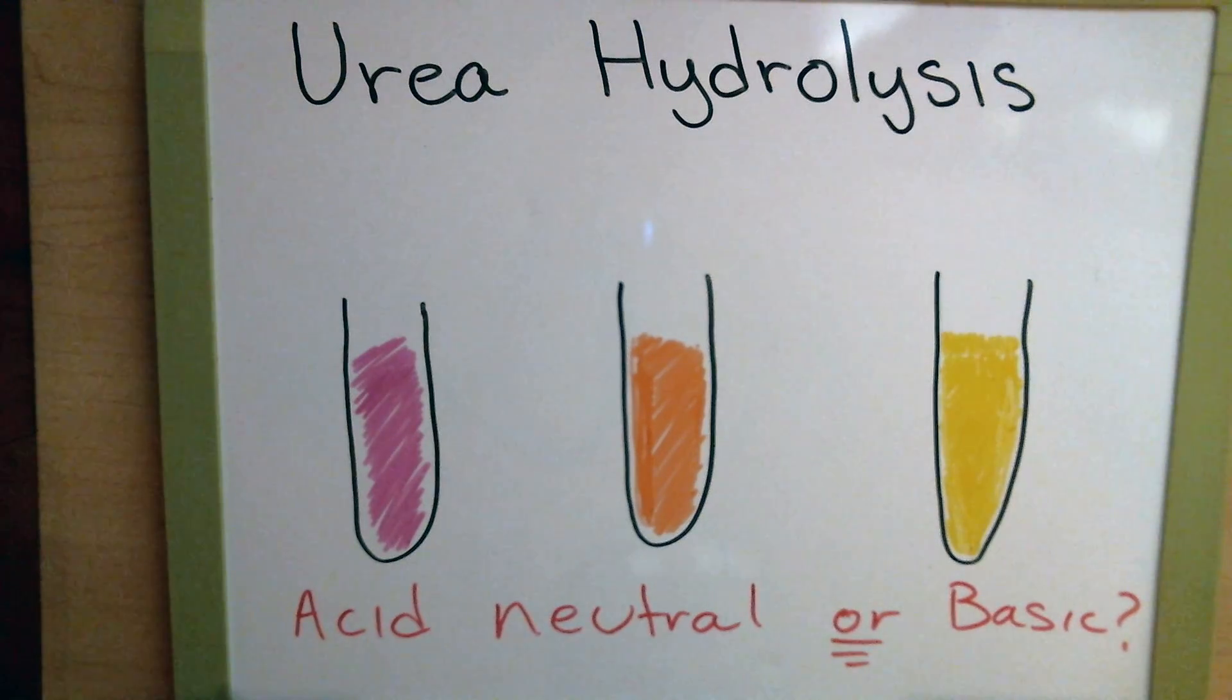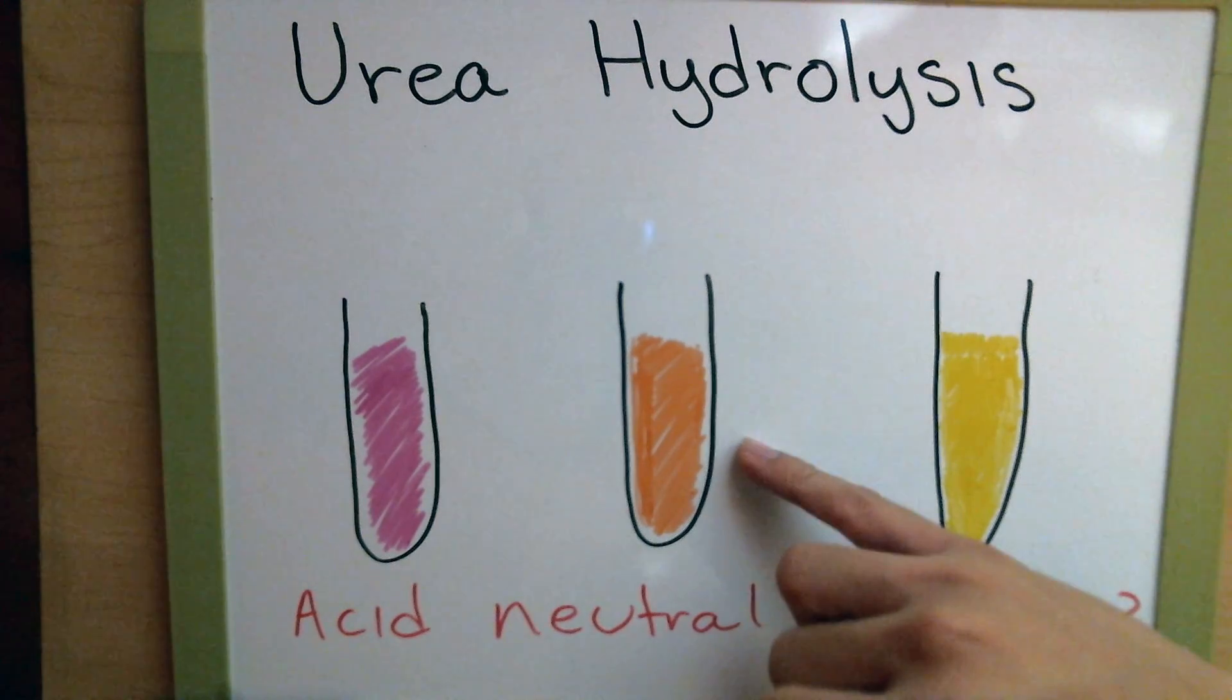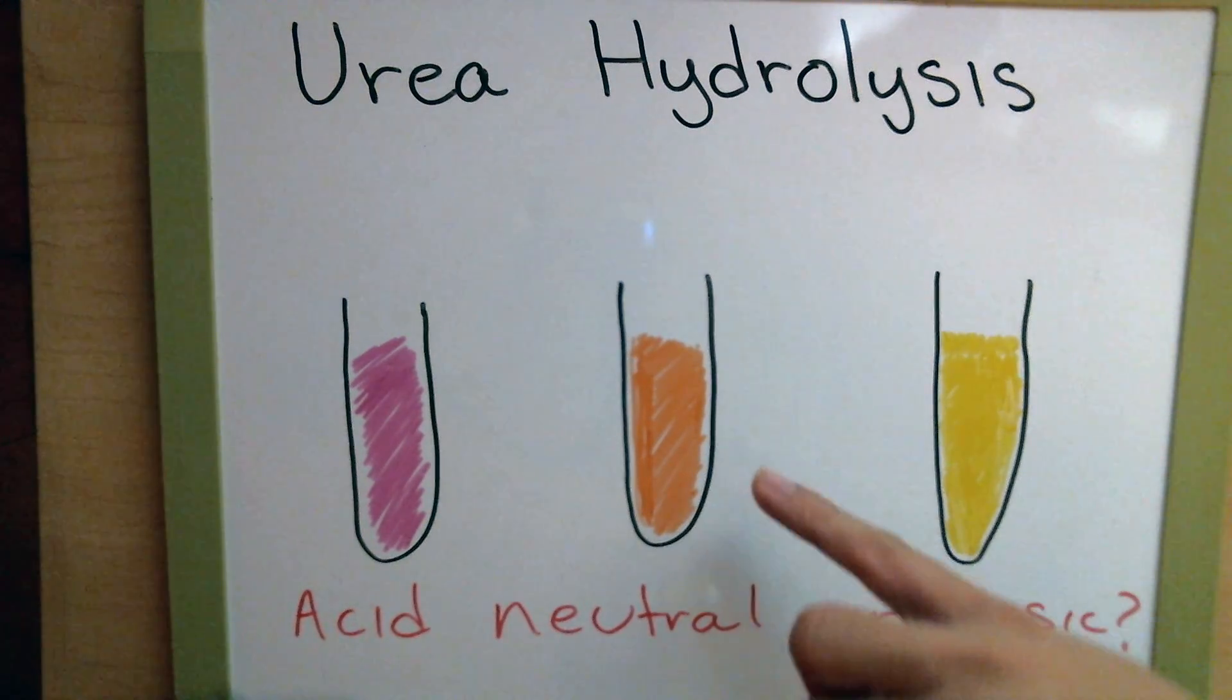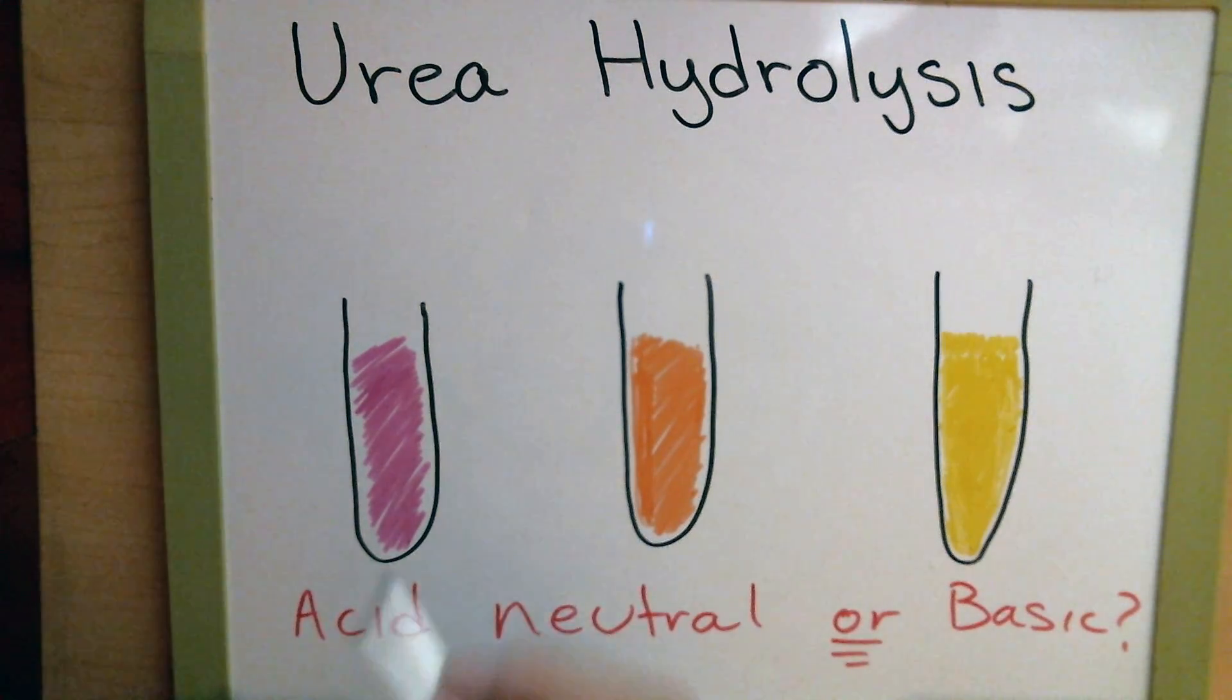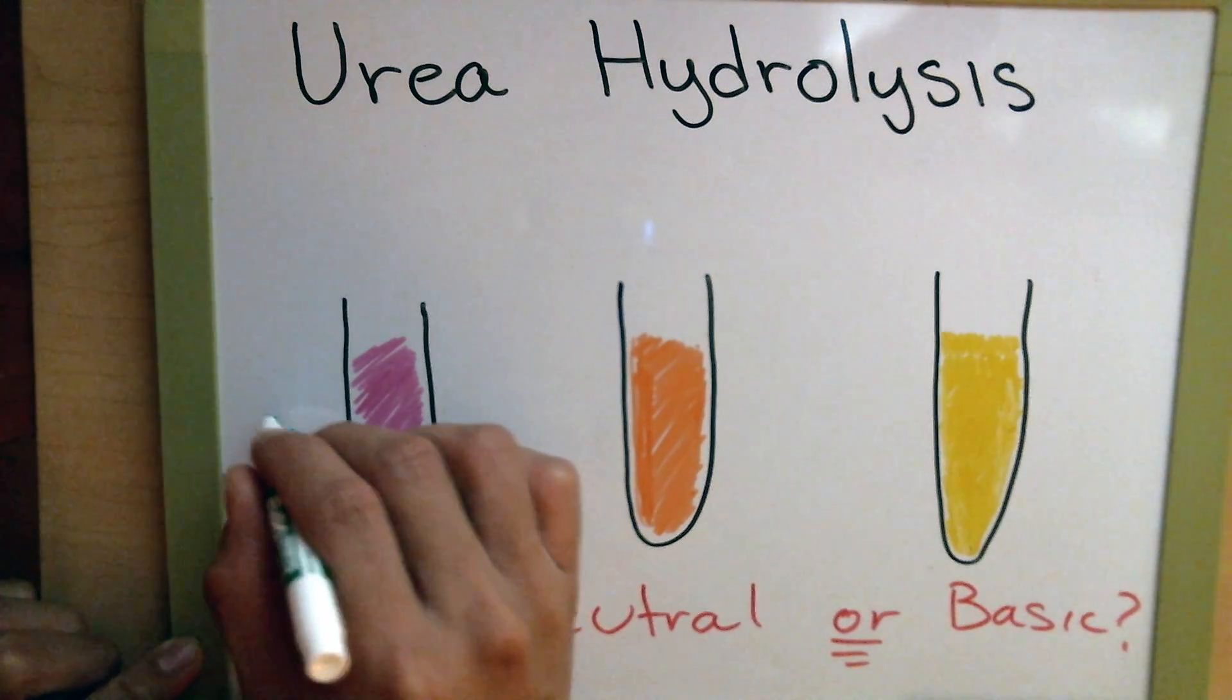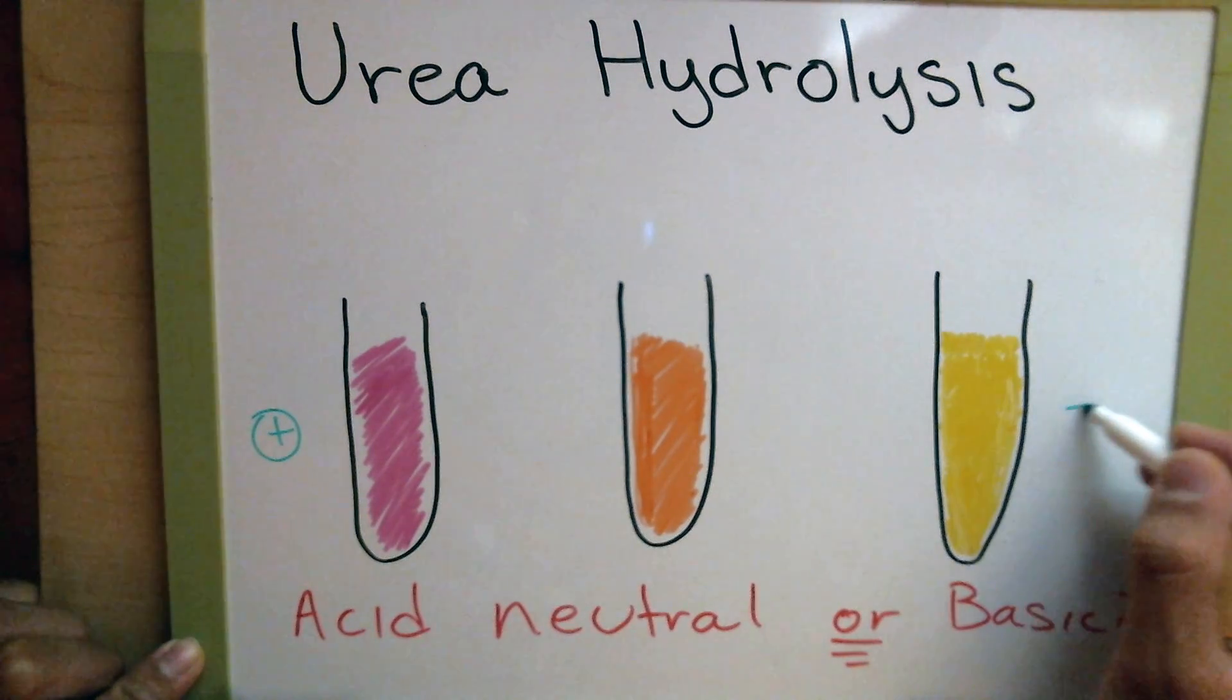Moving on, all we do here is a simple inoculation of the bacteria into the broth. And here in the middle, we just have the broth, which is an orange. This here in the pink yields a positive result, while over here in the yellow is a negative result.